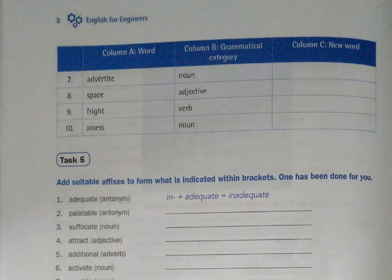Advertise, you have to make it into a noun: advertisement. Space, adjective: you can say spacious. Fright, you have to make it into a verb: frighten. Assess, you have to make it into a noun, and you get the new word as assessment.